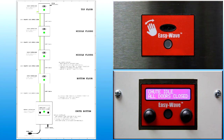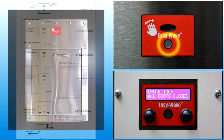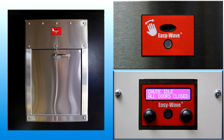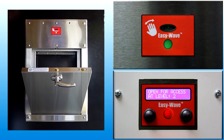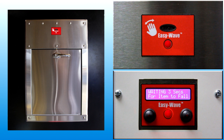User feedback about the operating status of the chute is provided by the LED indicator. When the light is off, the door is locked, the chute is idle, and waiting for user input. When the light is green, the chute is ready, the door is unlocked, and may be opened. When the light is red, the chute is busy, the door is locked, and user input is ignored.